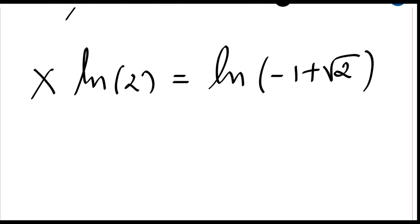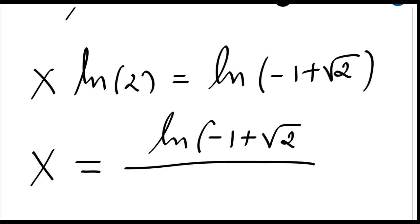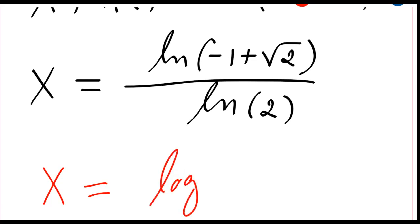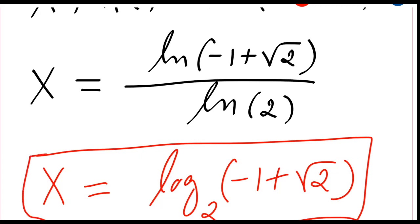So this implies that my solution x will just be ln(minus 1 plus the square root of 2) divided by ln(2), which by simplification is x equal to log base 2 of (minus 1 plus the square root of 2). So thank you for watching the video, please like the video and subscribe to the channel. Thank you.